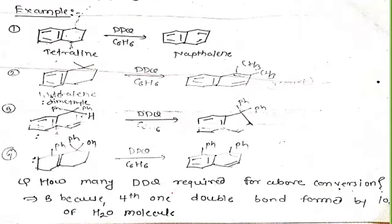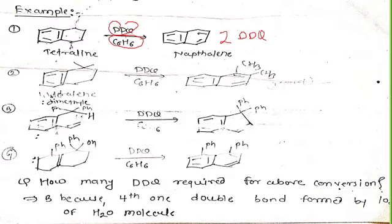Let us see some examples of what DDQ does. DDQ is best used with aromatic hydrocarbon solvent, that is C6H6 (benzene). Here it abstracts the proton and this gets converted to a double bond. There is formation of 2 double bonds, so we require 2 moles of DDQ. Here also there are 2 CH3 groups which get converted to this type of double bond.